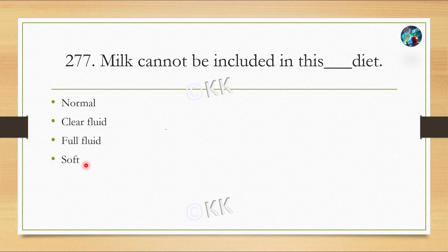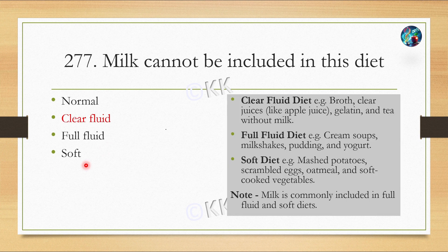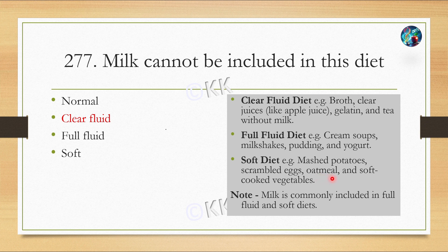The correct answer for the previous question is clear fluid diet. Milk is not included in a clear fluid diet. Clear fluid diet includes broth, clear juices such as apple juice, gelatin, and tea without milk. Full fluid diet includes cream soups, milk, pudding, and yogurt. Soft diet can include mashed potato, scrambled egg, oatmeal, soft cooked vegetables, and even milk.